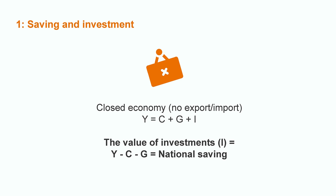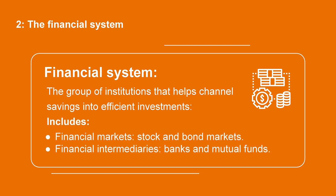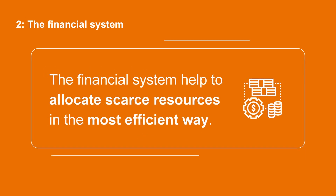How one transitions to the other has to do with the financial system. Assume that you deposited your savings into your bank account — your savings have now entered the financial system. The financial system is the group of institutions that helps channel savings into efficient investments. It includes financial markets such as stock and bond markets, and financial intermediaries such as banks and mutual funds. In this way, the financial system helps to allocate scarce resources in the economy in the most efficient way.